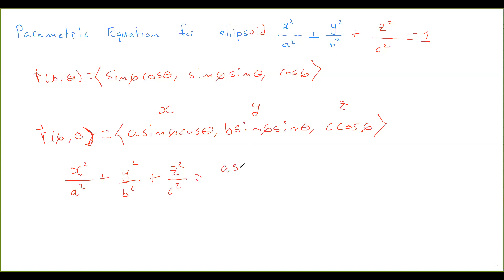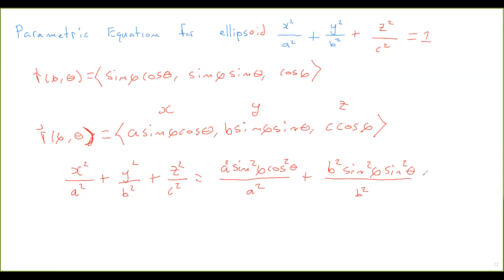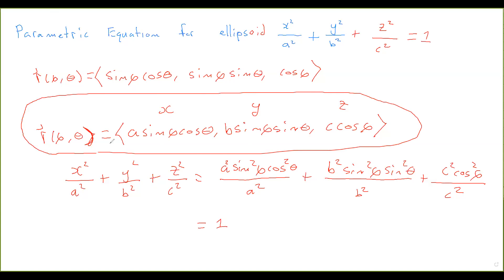What is this? Well, this is a-squared sine-squared φ cosine-squared θ divided by a-squared, and similarly for the other terms. It just turns out to be sine-squared φ cosine-squared θ plus sine-squared φ sine-squared θ plus cosine-squared φ, which equals 1. So this parameterization gives the ellipsoid with x-intercepts ±a, y-intercepts ±b, and z-intercepts ±c.